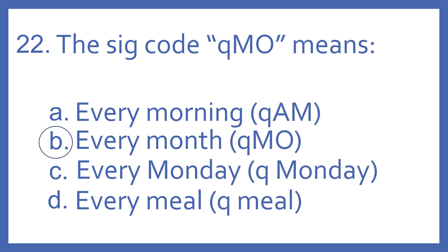And the answer is B, every month. QMO means every month. Every morning would be QAM, every Monday would just be QMonday, and every meal would be QMil. Q means every.